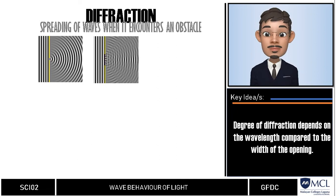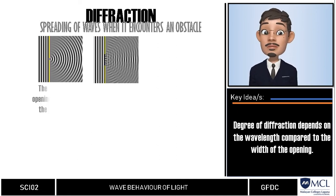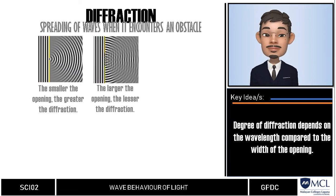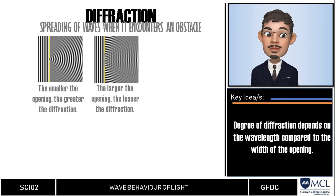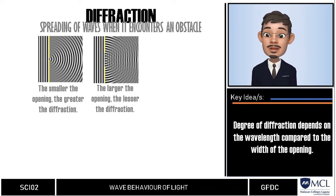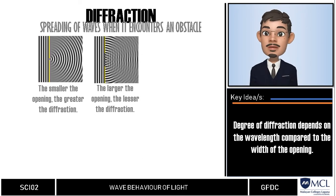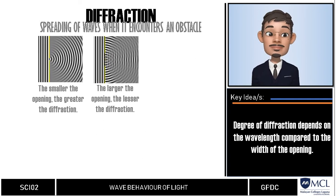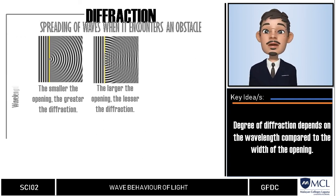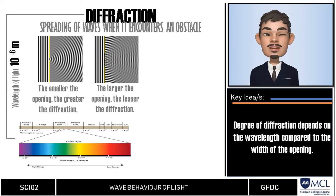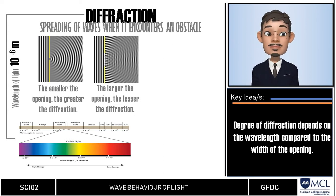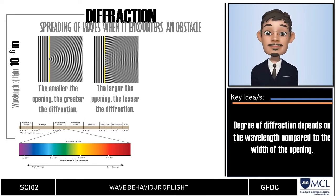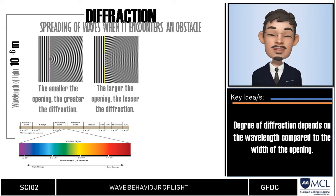They differ, however, in the degree of bending. Usually, the degree of diffraction depends on the wavelength of the wave and the size of the opening or object. In general, the longer the wavelength compared to the width of the opening or object, the greater the diffraction. This makes the diffraction of light not easily visible in ordinary slits, since ordinary objects or slits have dimensions of centimeters to meters, while light's wavelength is about 10 raised to negative 7 meters, or about 1 over 1 million of a meter.